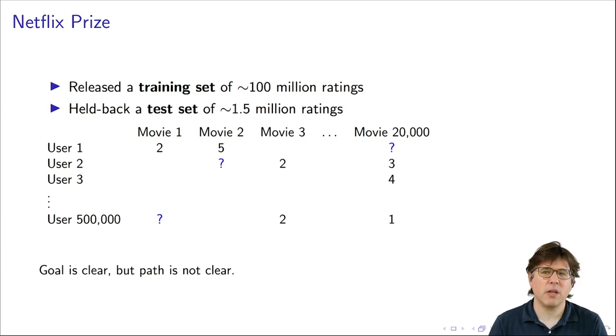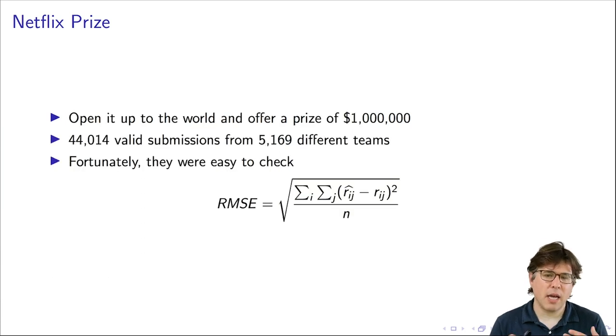The Netflix researchers had worked on it for many years. They thought there might be a better way to do it, but they weren't sure how. So they opened it up, and they offered a prize of a million dollars to anyone who could beat their solution by 10%. So they received 44,000 valid submissions from more than 5,000 teams. And so here it's very important that these submissions were easy to check. So imagine if Netflix said, send us an email with your ideas for how to improve this, or send us scientific papers that would help us improve this. It would be very difficult to read 44,000 submissions.